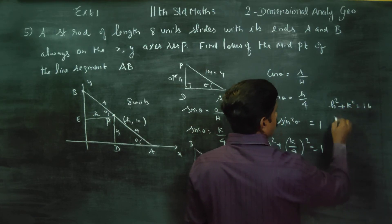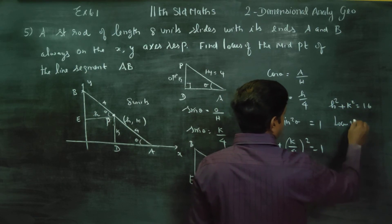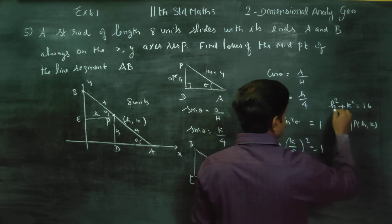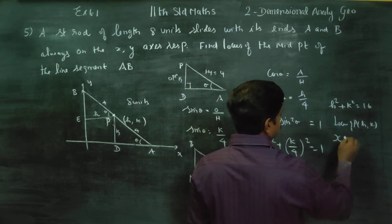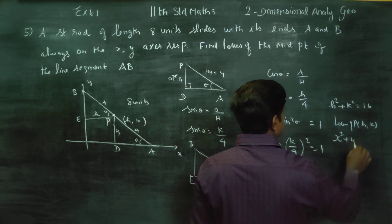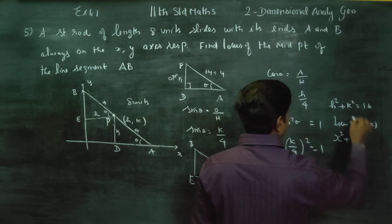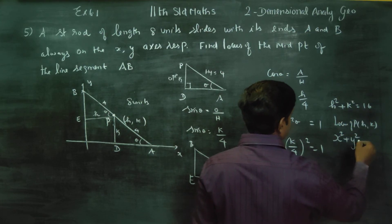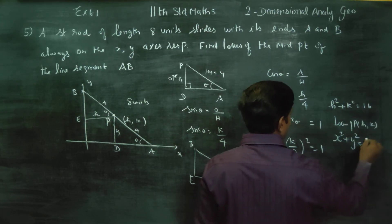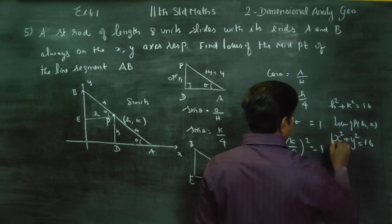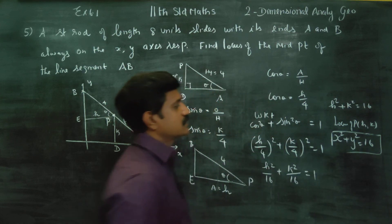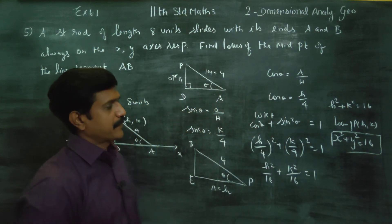To find the locus of P(h, k), locus means instead of H substitute X, and instead of K substitute Y. So the locus is X² + Y² = 16.